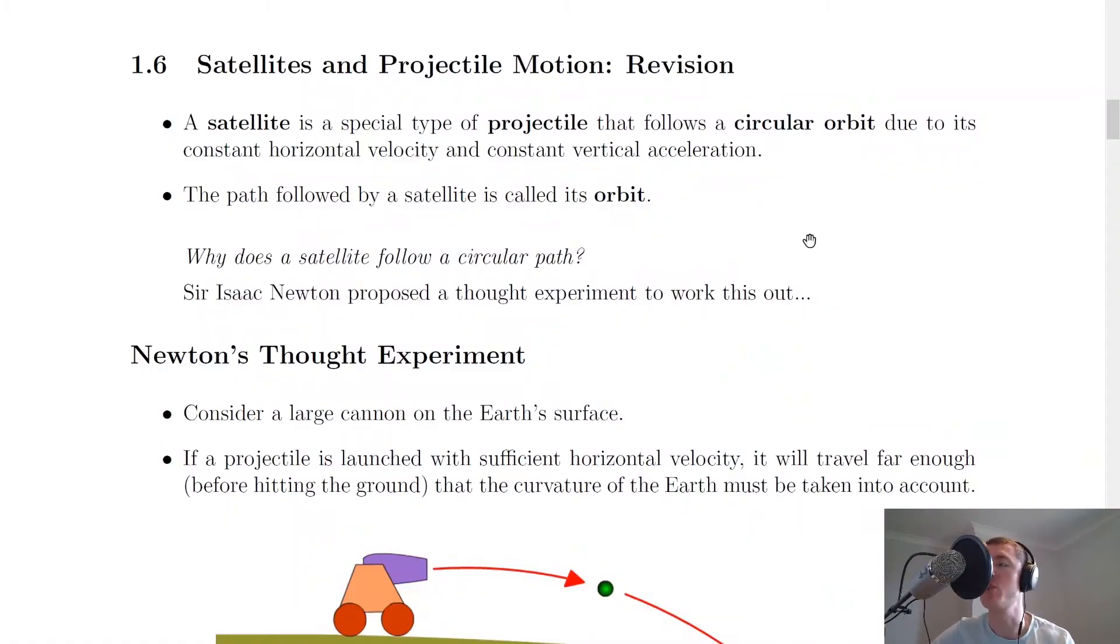Now this says it's revision because we looked at it in the National 5 Physics course, but it's also relevant for the higher course as well. A satellite is a special type of projectile that follows a circular orbit due to its constant horizontal velocity and constant vertical acceleration. Remember, these are the two key things that make a projectile move in the way that it does: constant horizontal velocity and a constant vertical acceleration.